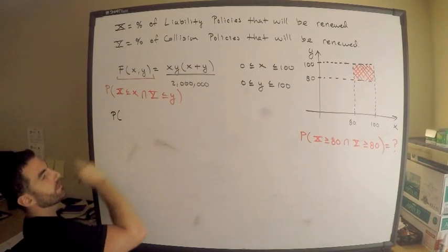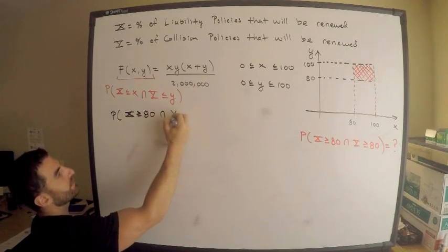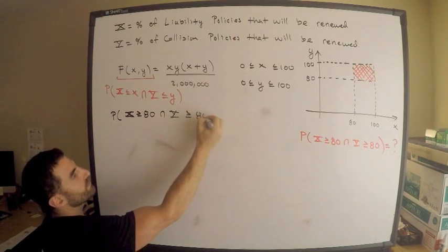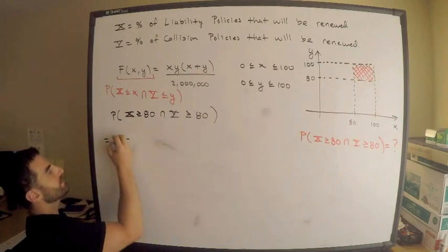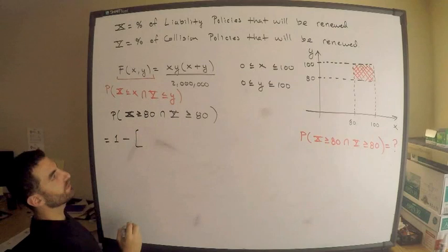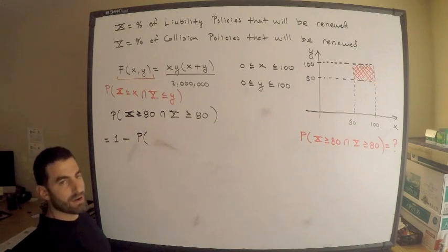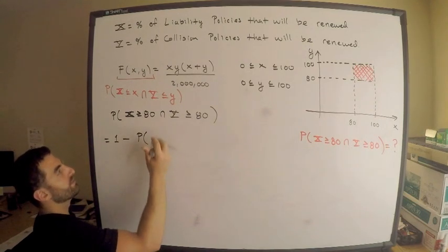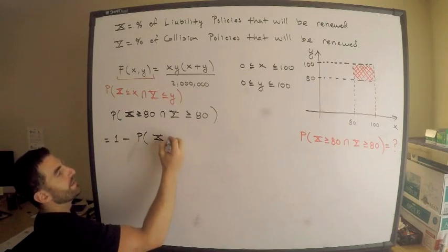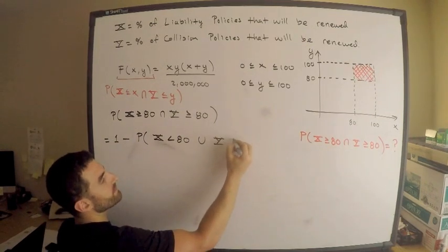We have the probability that X is greater than or equal to 80 and Y is greater than or equal to 80. Write this quantity in terms of its complement. This is one minus the probability. Now, be careful here. This is De Morgan's law. We not only need to switch the inequality, but we also need to switch the intersection to or. So this is X strictly less than 80 or Y strictly less than 80.